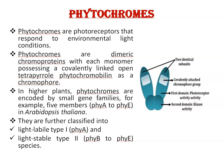Phytochromes are photoreceptors that respond to environmental light conditions. Phytochromes are dimeric chromoproteins. Dimeric means composed of two identical monomers. This is a structure of a phytochrome and these are two monomers, with each monomer possessing a covalently linked open-chain pyrrole phytochromobilin as a chromophore.